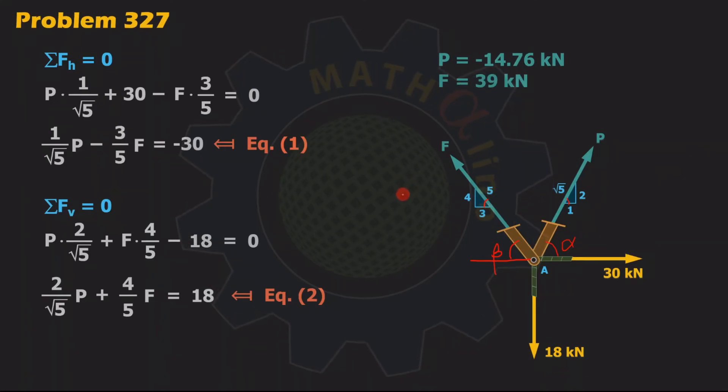Now, we are only after the magnitude of P and F. This negative sign here indicates that the direction of our P is wrong. That is the meaning of this negative answer. May I erase these writings? The actual value of P is towards joint A, and these are our answers.